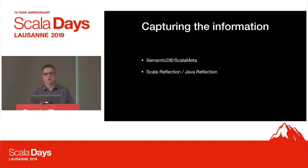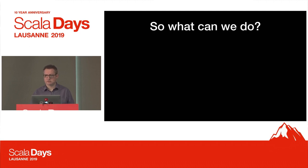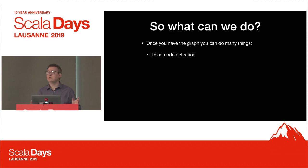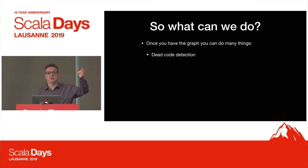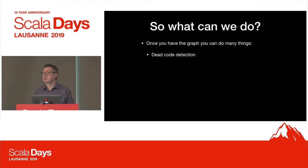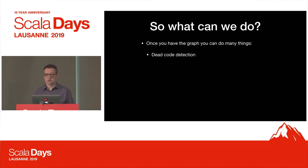So given all these caveats and warnings, what can we do? It turns out I can do a bunch of really interesting stuff. The first one is dead code detection. Once I have the entry points, I can do simple graph coloring. Basically you go through the graph, you color the entry points, and for every method that those entry points touch you color those, and you keep going until there's nothing left to color. Anything left uncolored is dead - unreachable from the entry points, it cannot be executed by your program.